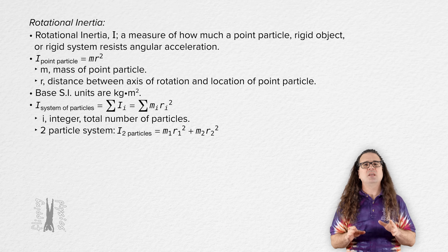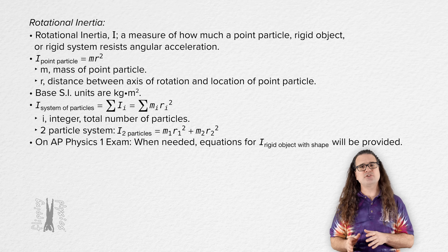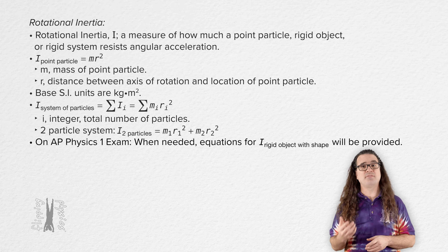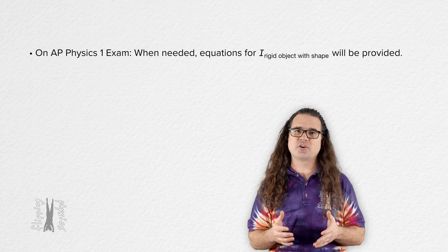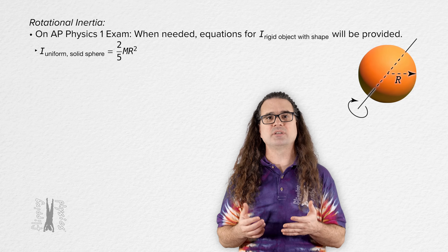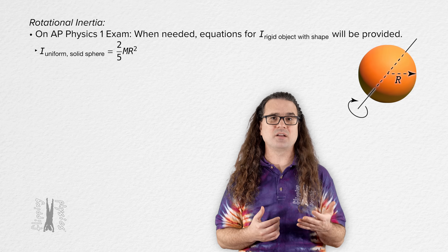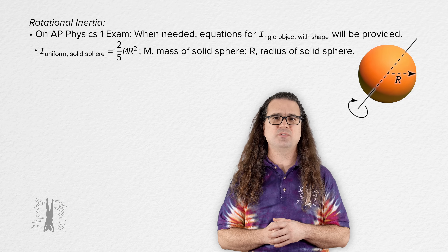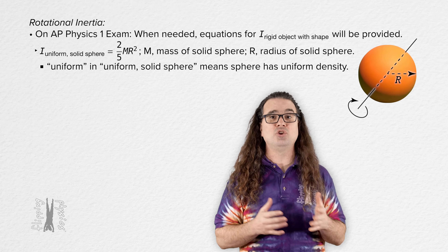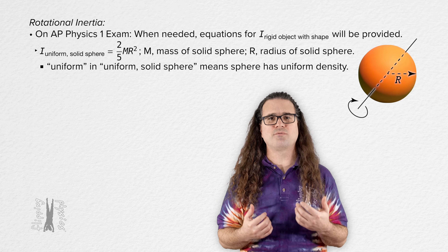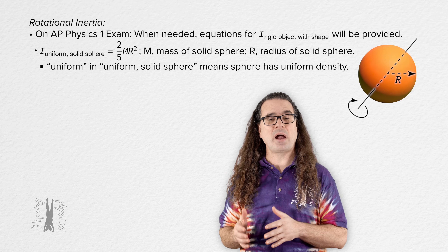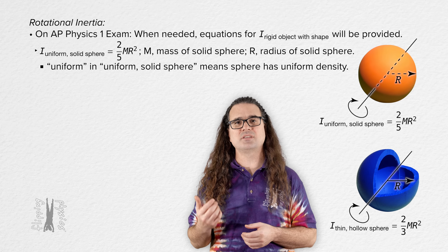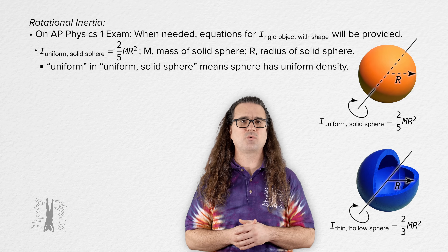If there is ever an instance where you need an equation for the rotational inertia of a rigid object with shape on the AP Physics 1 exam, that equation will be provided for you. For example, the rotational inertia of a uniform solid sphere about an axis through its center of mass is two-thirds m times r-squared, where m is the mass and r is the radius. The term uniform means the sphere has a uniform density — the same density throughout its entire shape. The rotational inertia of a thin hollow sphere about an axis through its center of mass is two-thirds mass times radius squared.